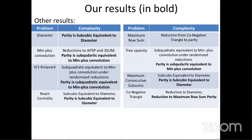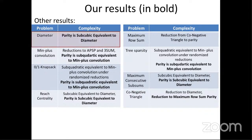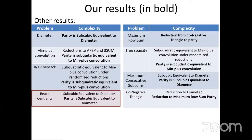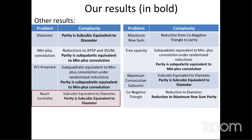Additional results: median parity is subcubic equivalent to APSP and median; radius parity is subcubic equivalent to APSP and radius; sum of eccentricities is subcubic equivalent to APSP; diameter parity is subcubic equivalent to diameter; min-plus convolution is subquadratic equivalent to its parity version (subquadratic equivalent is subcubic equivalent with exponent 2 instead of 3); certain versions of knapsack parity are subquadratic equivalent to knapsack and min-plus convolution; and rich centrality parity is subcubic equivalent to diameter.